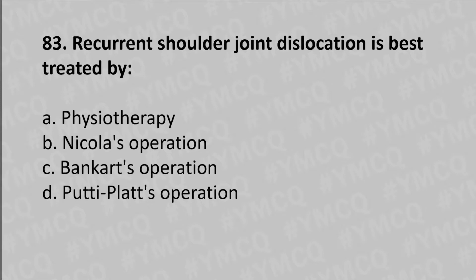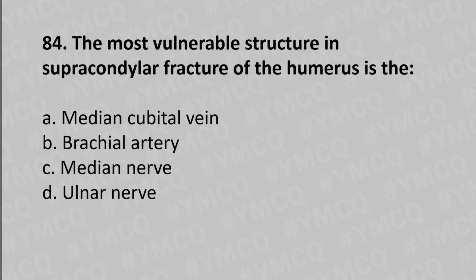option B. Moving to our 84th question: the most vulnerable structure in supracondylar fracture of the humerus is option A median cubital vein, option B brachial artery, option C median nerve, option D ulnar nerve. The answer is option B, brachial artery. Moving to our